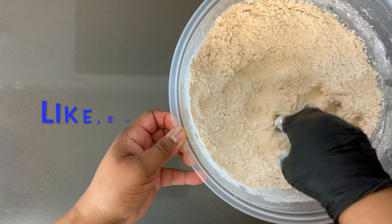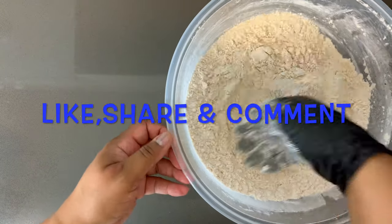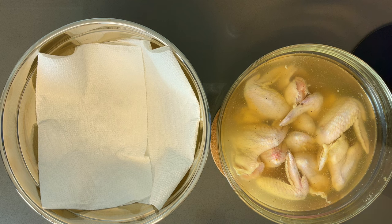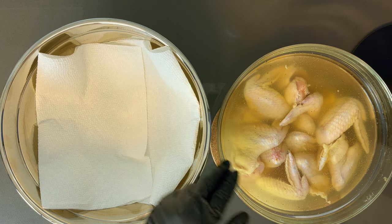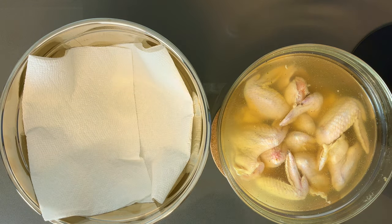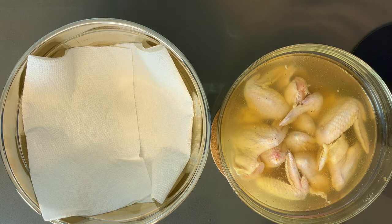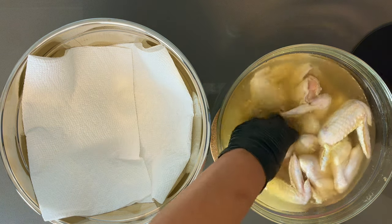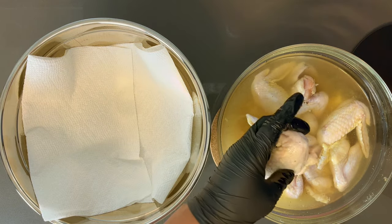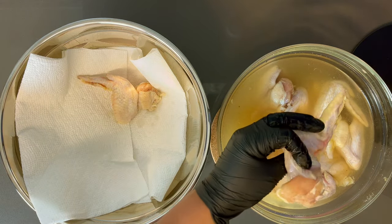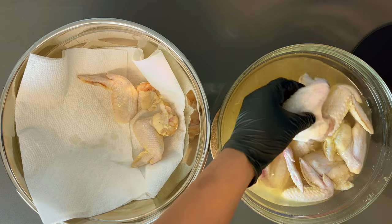We are back the very next day and our chicken has brined overnight. What we're going to do now is remove it from the brine and place it in a bowl on some paper towel so the excess brine can drip off. Once you remove your chicken, you can totally discard this solution. I already know it's going to taste good.